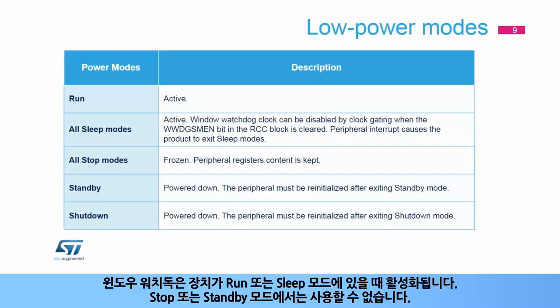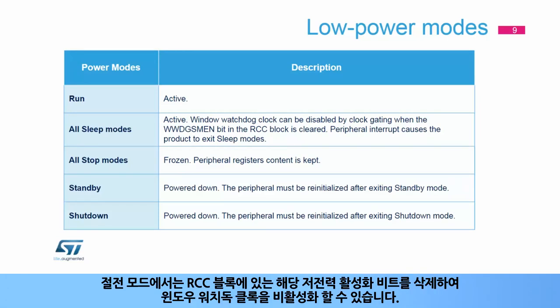The window watchdog is active when the device is in run or sleep modes. It is not available in stop or standby modes. In sleep mode, the window watchdog clock can be disabled by clearing the corresponding low power enable bit located in the RCC block.